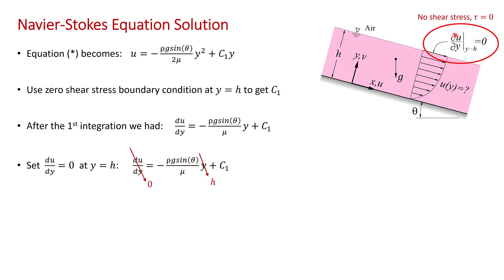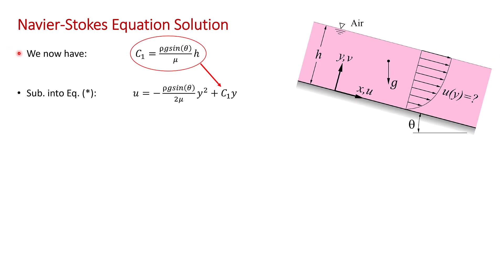So what we do now is apply this equation at y = h at the liquid-air interface. And so we set du/dy = 0 here, and we set y = h. So there we go, 0 = -ρg sin θ/μ h + c₁, and we can solve this for c₁ and get ρg sin θ/μ times h. And so now we have the constant c₁.